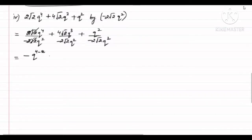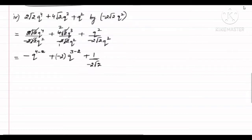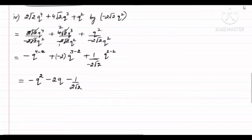Plus — again root 2 and root 2 cancel, 4 over 2 gives 2, the negative from below is written above as minus 2, and q's power becomes 3 minus 2, that is q. Plus — now on top there is no constant, so it is 1 upon minus 2 root 2, as it is, and q power 2 upon q power 2 gives power 2 minus 2, that is 0. So this becomes minus q², then minus 2q. Again the minus gives minus 1 by 2√2. And q power 0 is 1. So this will be your final answer.